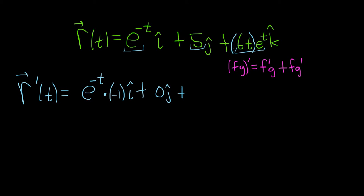So here, the first piece is 6t, so its derivative is 6 times the second, so e to the t, plus the first, so 6t, times the derivative of the second. And the derivative of e to the t is e to the t. And let's not forget, we still have our k hat.